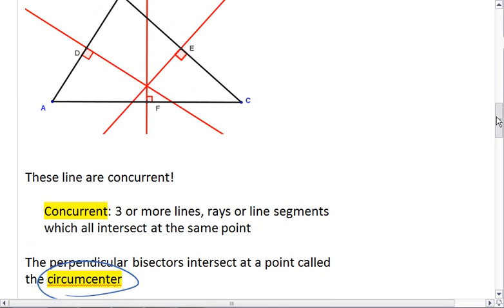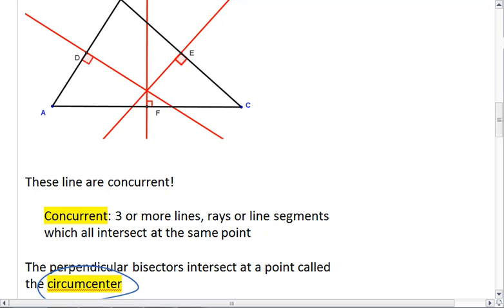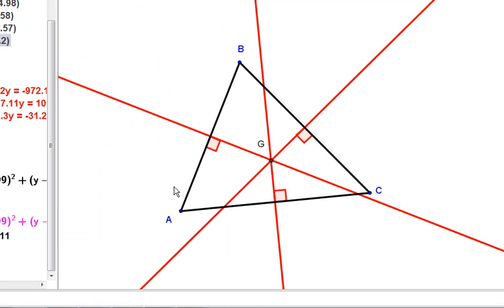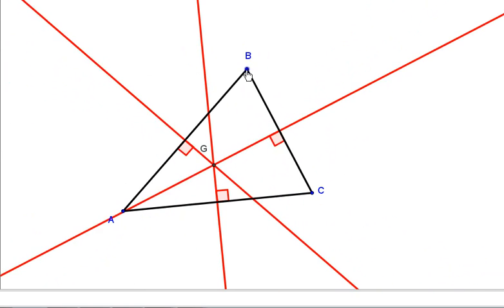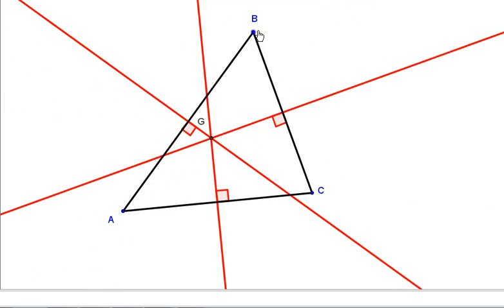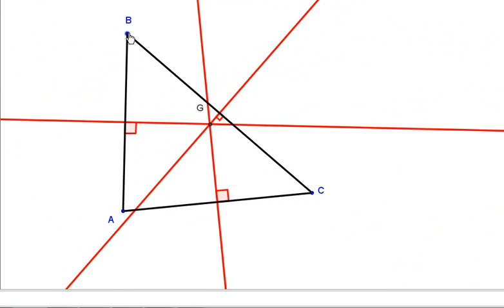Let's look at our triangle again and see what we can notice about the circumcenter. Right now, we have an acute triangle. We notice that our circumcenter will move around, but it always stays inside our triangle.